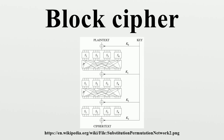The exact transformation is controlled using a second input, the secret key. Decryption is similar: the decryption algorithm takes a 128-bit block of ciphertext together with the secret key, and yields the original 128-bit block of plaintext. For each key k, ek is a permutation over the set of input blocks, and each key selects one permutation from the possible set.